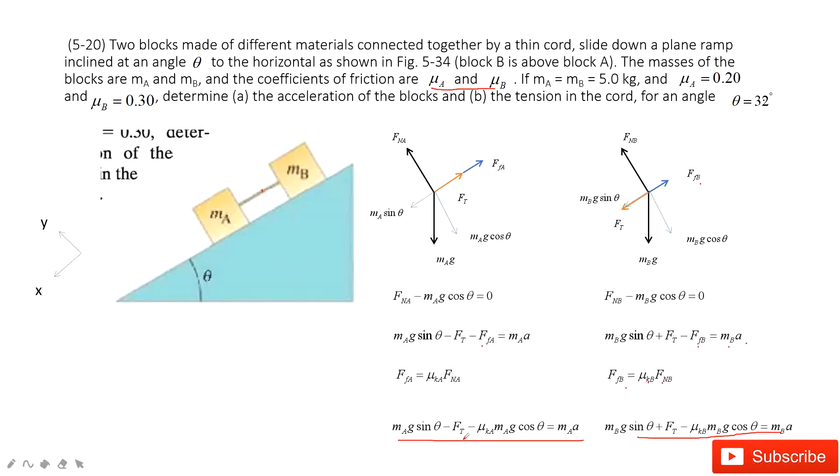Now we have these two equations with just two unknown quantities: the tension and the acceleration. It's an easy way to solve this equation. The angle theta is given, mass is given, mu Ka is given, and mu Kb is given. So you can solve these two equations to get the tension and the acceleration.